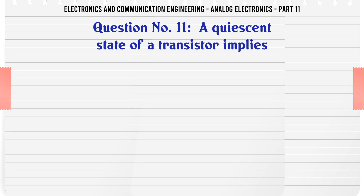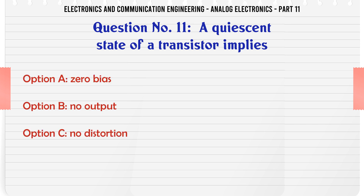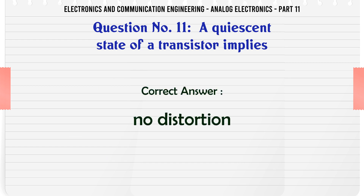A quiescent state of a transistor implies. A. Zero bias. B. No output. C. No distortion. D. No input signal. The correct answer is: No distortion.